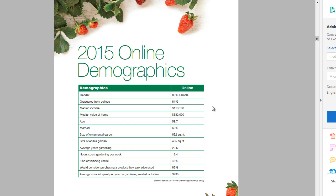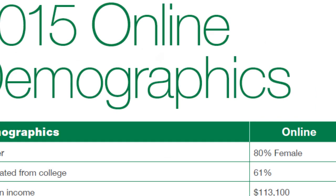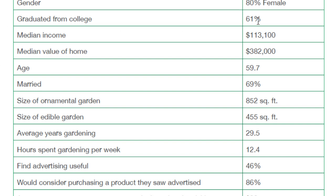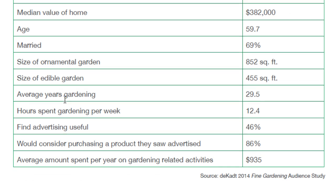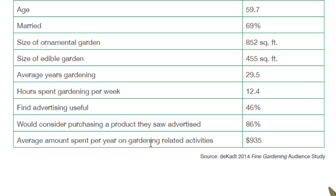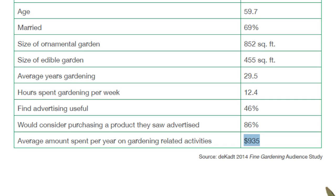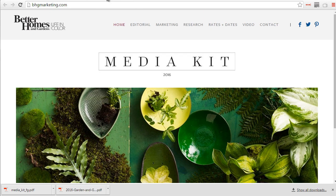Fine Garden shows 1.2 million unique visitors and then we see online demographics — nice, there we go. Gender: 80% female, that confirms what we've been talking about. Graduated from college — that confirms it as well. Median income around $100,000. Age: 59, so we can see that's more on the older scale. Married: 69%. It even shows how big their garden is and their average amount spent per year on gardening-related activities — up to about $934 to $935. That gives us a really good idea of who we're dealing with.